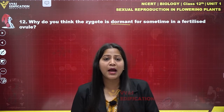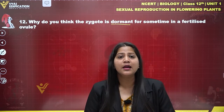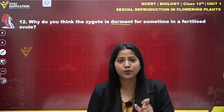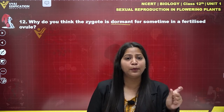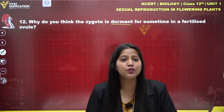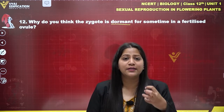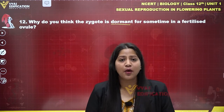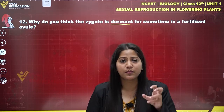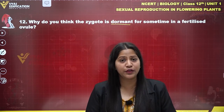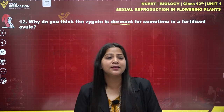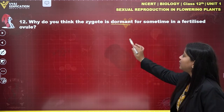This primary endosperm nucleus, which is made from the fusion of three haploid nuclei, undergoes several mitotic divisions to form a large nutritive endosperm for the developing embryo. The formation of endosperm, which is a large nutritive tissue, ensures the source of nutrition for the developing embryo.